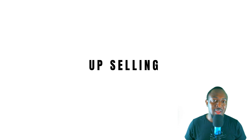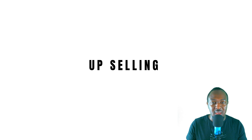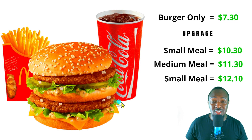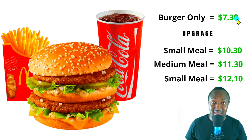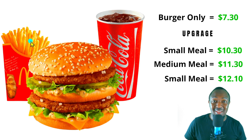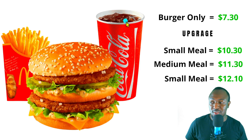Now we have something called upselling. Sometimes when you're just selling one product, you don't make a bigger profit margin. If you want to get more profit from your products, you have to do something called upselling. Most restaurant owners do this a lot. When you're buying just the burger, McDonald's will sell it to you for about $7.30 per burger. But when you go to McDonald's, they ask if you want to upgrade to a meal — because when they sell you the Coca-Cola and fries, they make more profit since the profit margin on those items is higher than on the burger.